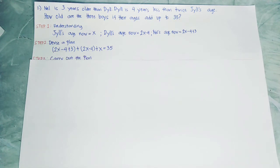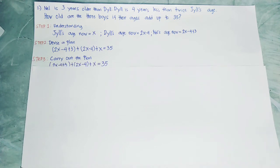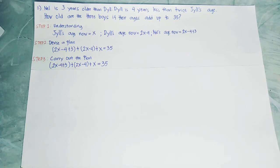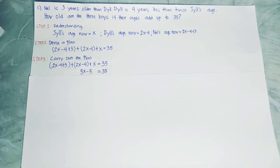Step 3 is carry out the plan. We have to carry out the plan that we have created: 2x minus 4 plus 3 plus 2x minus 4 plus x equals 35. Let's combine the like terms. 2x plus 2x plus x equals 5x, and negative 4 plus 3 equals negative 1, minus 4 equals negative 5.